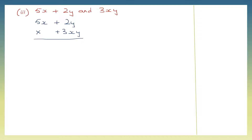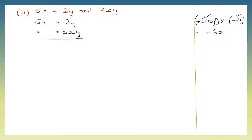Let's take 3xy into 2y. Multiply the signs: plus into plus is plus. Then the numbers: 3 into 2 is 6. Then the literal coefficient x — on the other side I don't have x, so I'll put only 1x here. Now y: I have 1y here and 1y there, so that is y to the power of 2. So here I have plus 6xy squared.